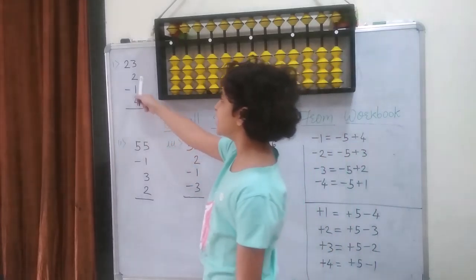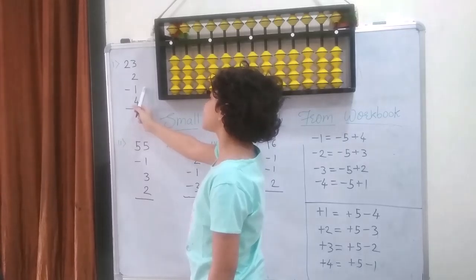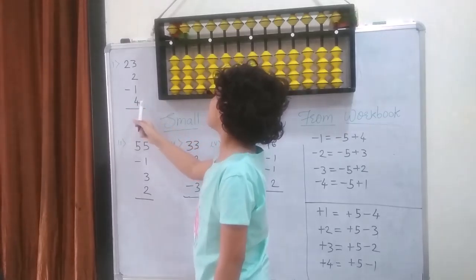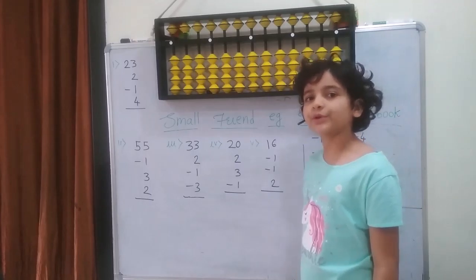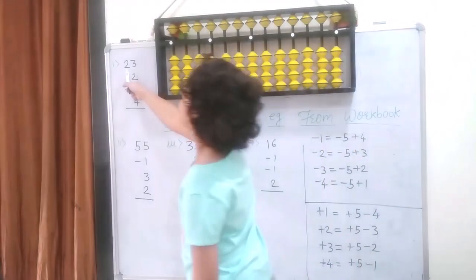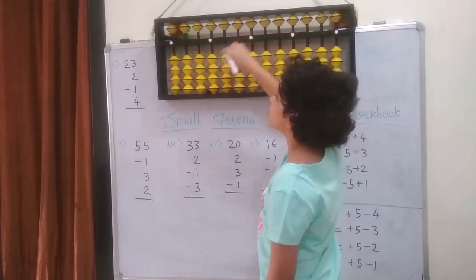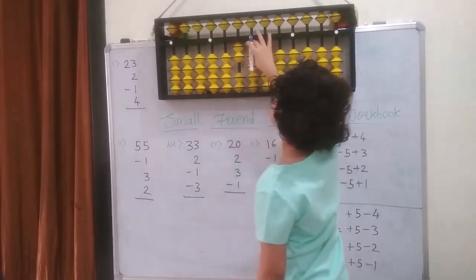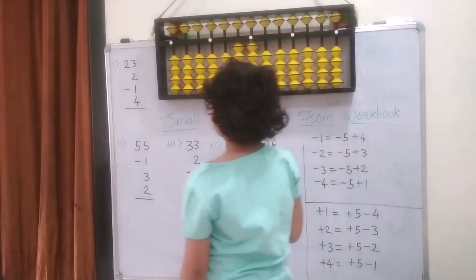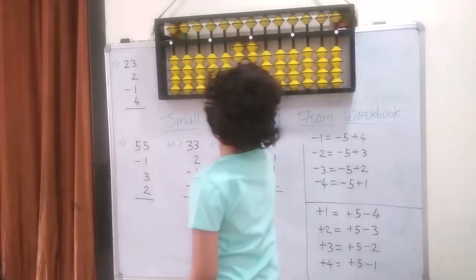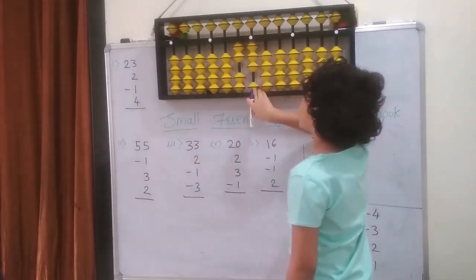First question: 23 plus 2 minus 1 plus 4. So first on the abacus I am going to put 23. So 2 in the tens place, and 1, 2, 3 in the ones place. Then I am going to add 2 in the ones place.